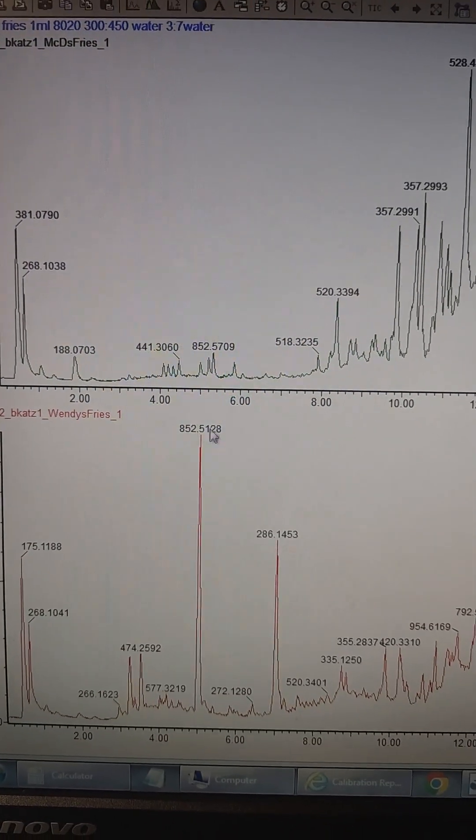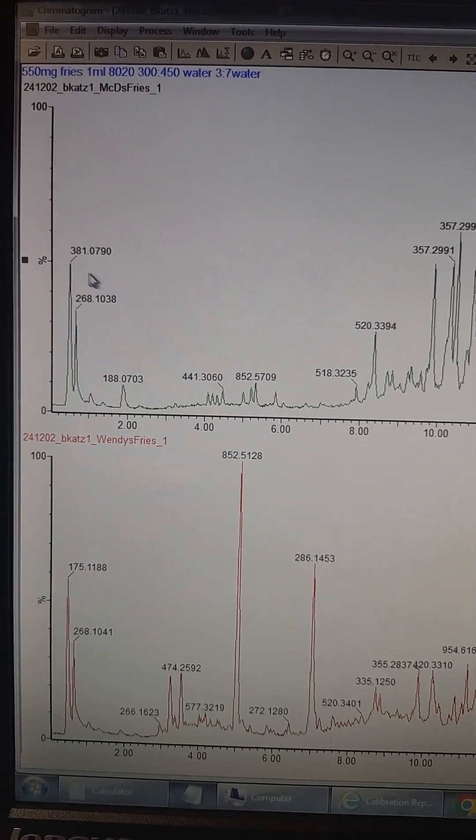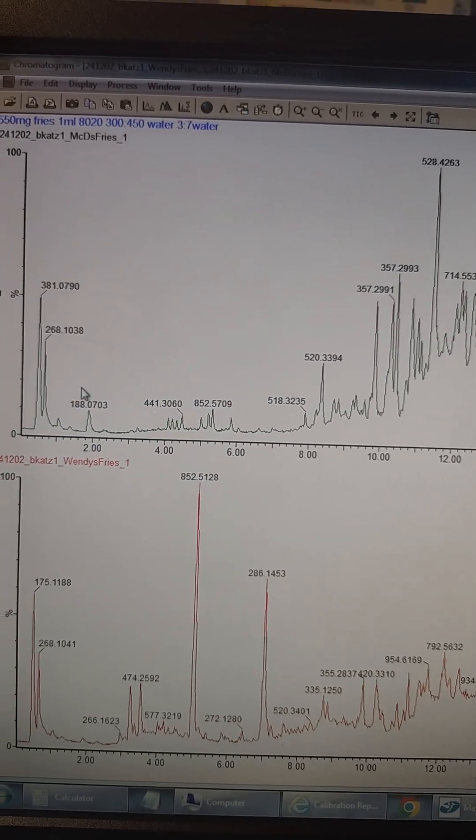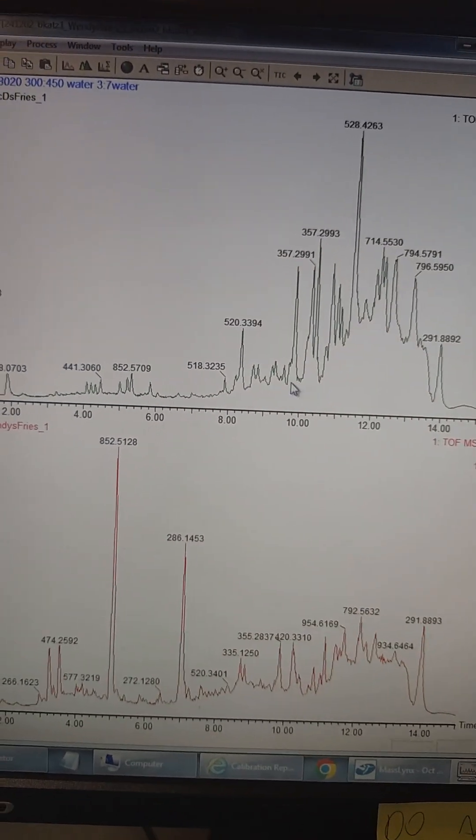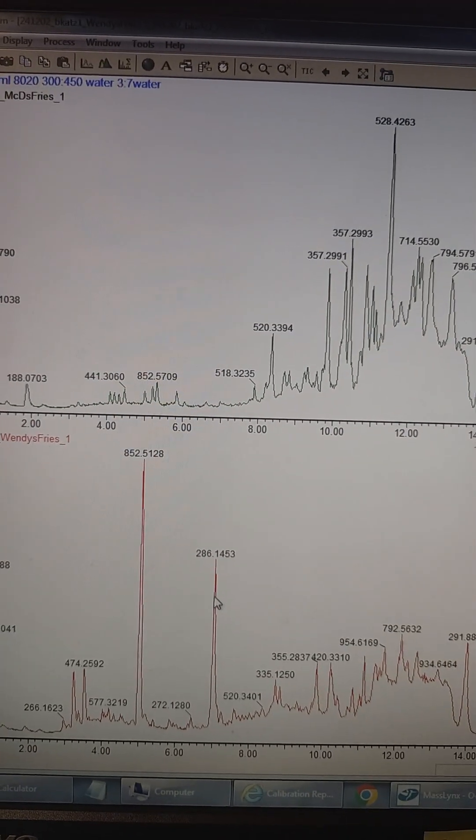The start is noticing any other major differences other than this massive difference in the green potato toxin. It looks like there's a little bit more sugar in the McDonald's french fries compound here. It's a much different potato. And then this 286 mass, trying to figure out what this 286 mass is,